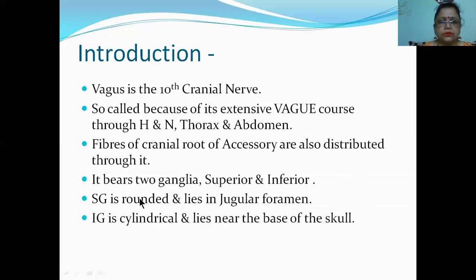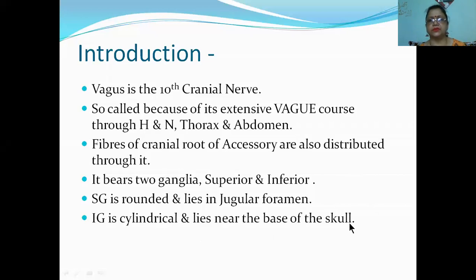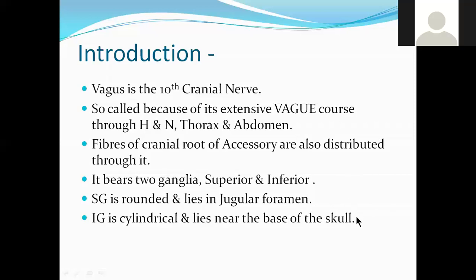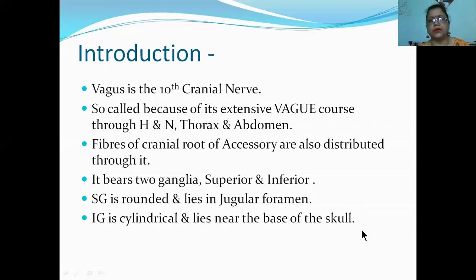Two ganglia - always remember the superior ganglion is rounded and lies in the jugular foramen, and the inferior ganglion is cylindrical and lies near the base of the skull. The vagus nerve passes through the jugular foramen along with cranial nerve number 9 and 11.